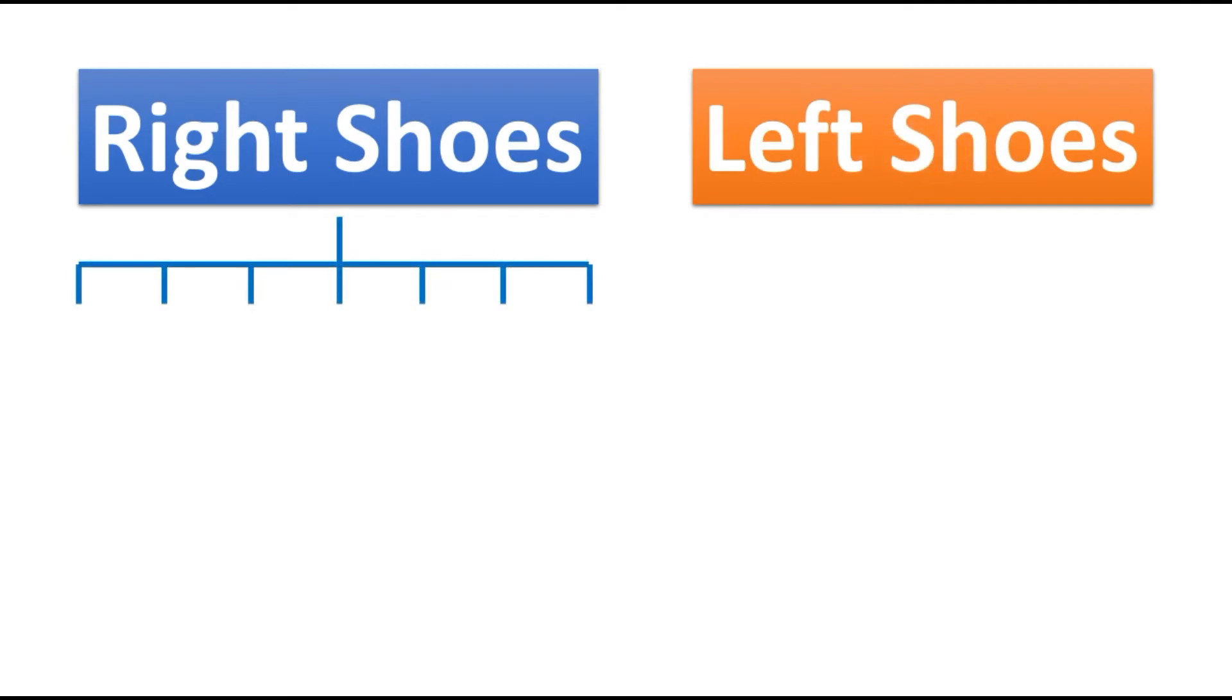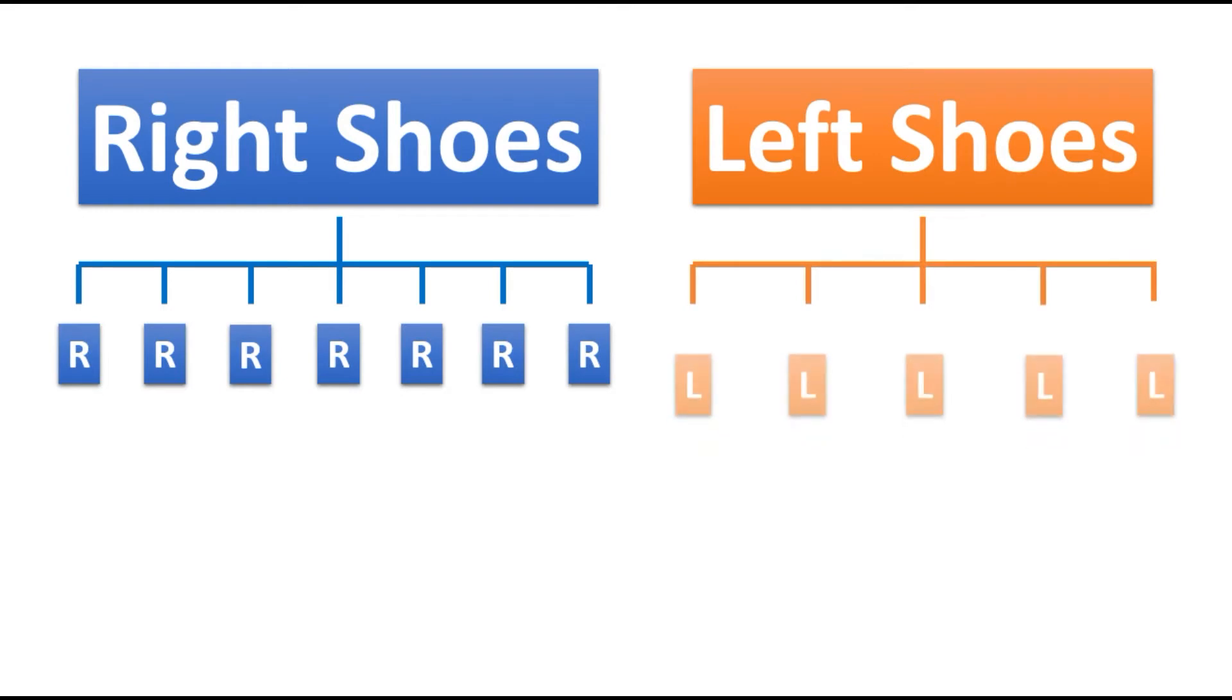Suppose that someone offered you bundles of right shoes and left shoes. Suppose that you have seven right shoes and five left shoes. Now the question is, how many pairs of shoes could you assemble from it? Let's see.